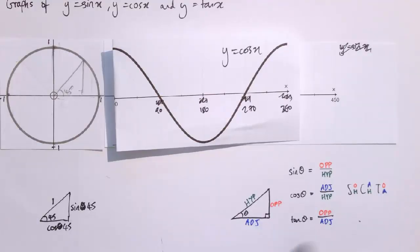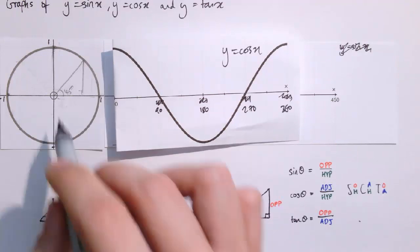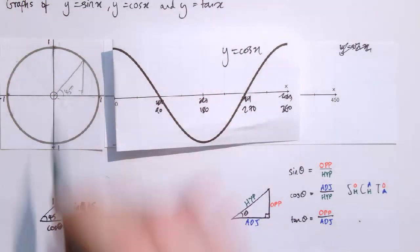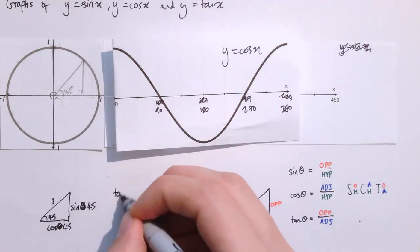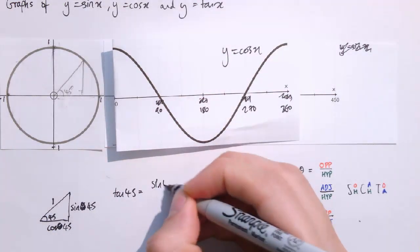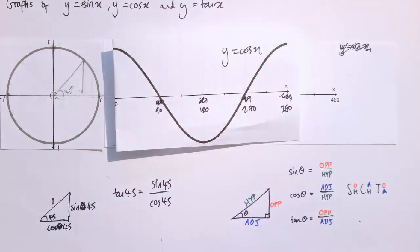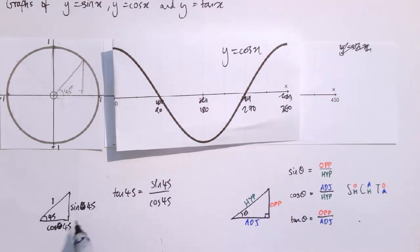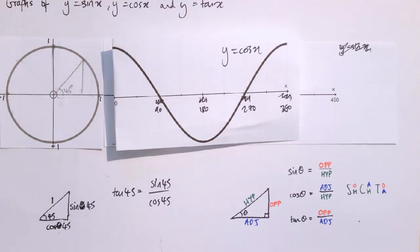And the last one to think about then is tan x. And now tan is the opposite divided by the adjacent. And actually we can see here then on the unit circle that, for example, tan 45 is the opposite divided by the adjacent. That's sine 45 divided by cos 45. So we've got two ways to think about tan really. It's either as the gradient of this line. It's the sort of how much y changes as x changes. This one divided by this one. Or we can just think of it as sine over cos.